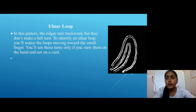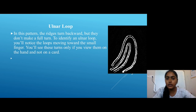The second subcategory is Ulnar Loop. In this pattern the ridges turn backward but do not make a full turn. To identify an Ulnar Loop, you will notice the loops moving toward the small finger. You will see these turns only if you view them on the hand.